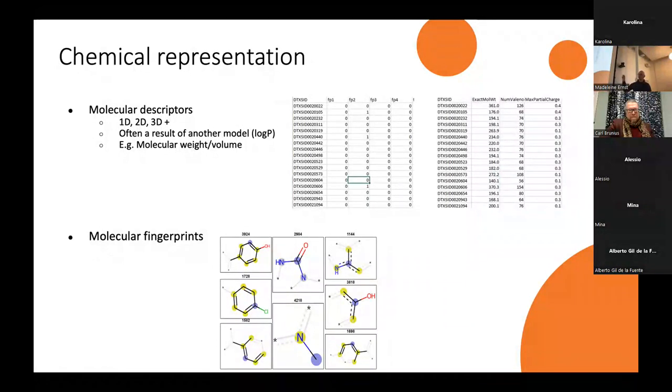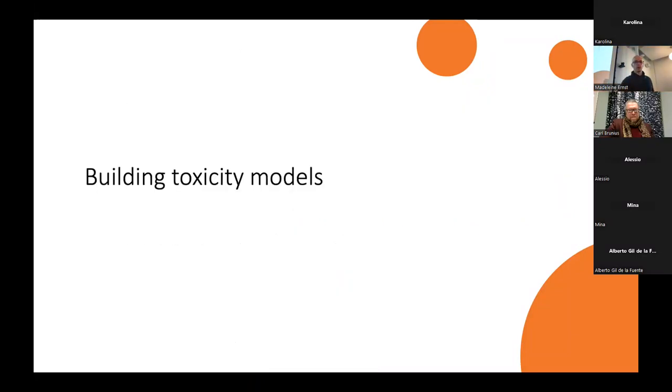Or we can do molecular fingerprints. Fingerprints are substructures, basically. It's a hashing algorithm which is giving substructures of a molecule. What we get here is tables with per chemical compound, whether a certain fingerprint is present or not. This is the data we use for building the toxicity models.